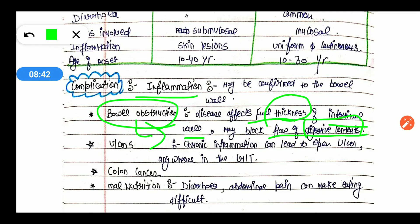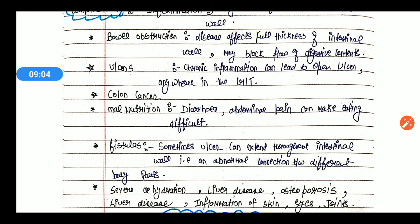Next is ulcer. We can normally correlate that when inflammation is caused, it can cause ulcers. Chronic inflammation can lead to open ulcers anywhere in the GIT. Next is colon cancer - this is a chronic condition. If IBD progresses, it can lead to colon cancer. So these are the points: diarrhea and abdominal pain can make eating difficult.